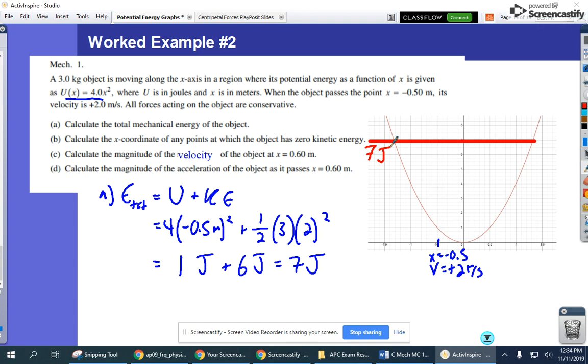Part B asks us to calculate the x-coordinate of any position, of any point at which the object has zero kinetic energy. Well, if we're here, we're going to climb up that curve until we touch that little cap, at which point all of our energy is potential energy. So the real question is, when does that happen?